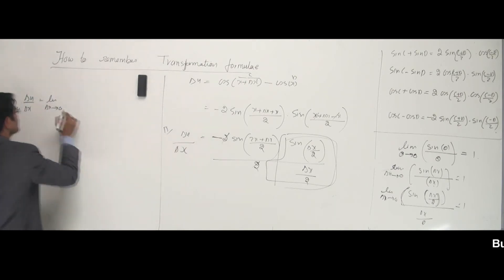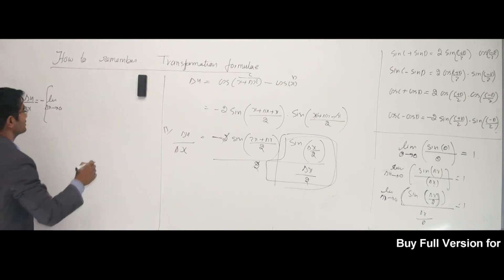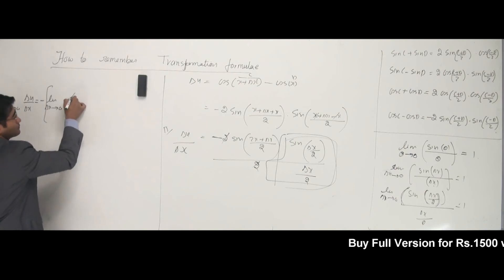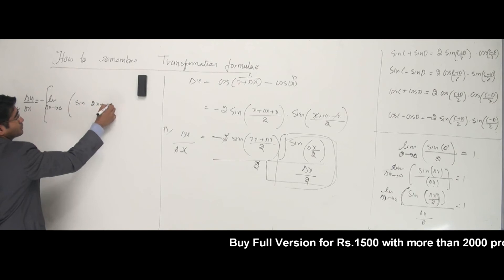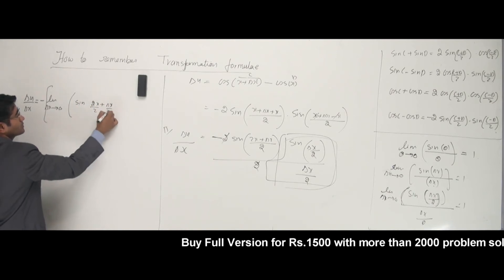I have minus 2, this minus sign will remain here outside. That is, I have sine of 2x plus delta x by 2, which can be written as 2x by 2.